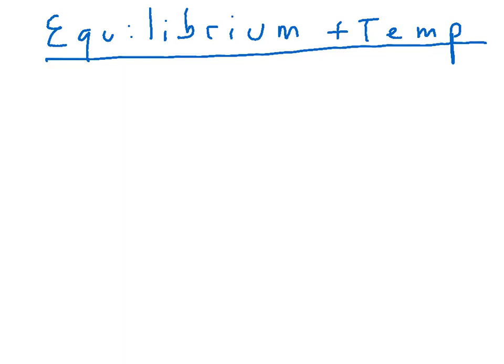So we saw that the equilibrium constant tells us what the composition of the reaction mixture will be at the end point, basically once we've reached equilibrium. So we might wonder how equilibrium is affected by temperature.